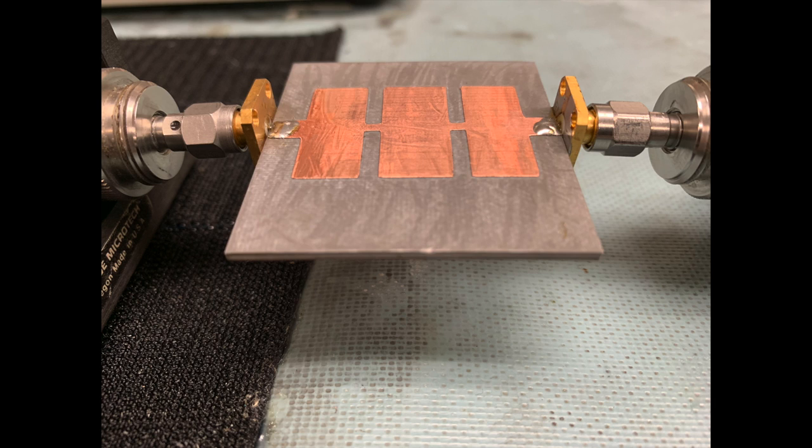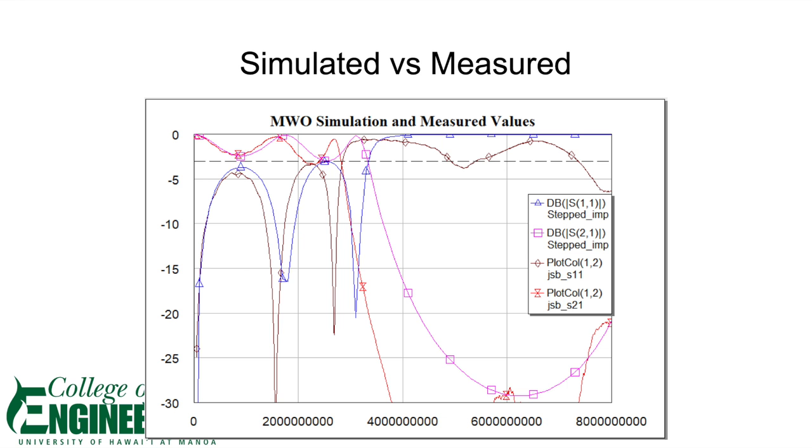Then we connect our low-pass filter to the network analyzer. After taking measurements of the filter, we compared the values to the simulation we did on microwave office. We noticed that the trend of the plots are similar, but the cutoff frequency for the fabricated filter came up shorter at around 2.4 gigahertz. Although our filter provided a decent 3dB ripple in the passband and a steep attenuation, it did not perform how we tried to design it to be.